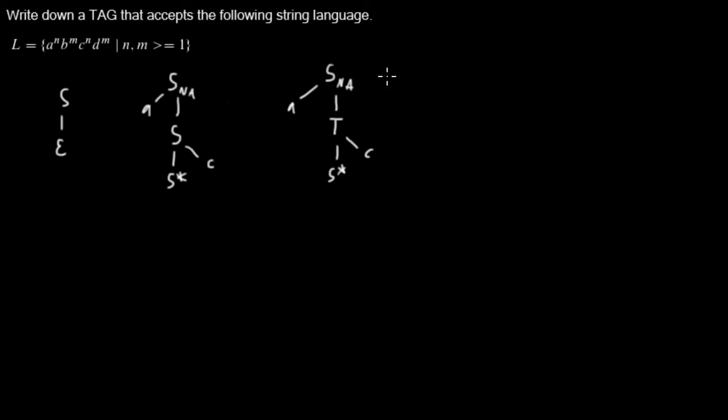Because if you have an auxiliary tree where the root label must be the same as the foot label, this one means we can only apply adjunctions into S nodes.